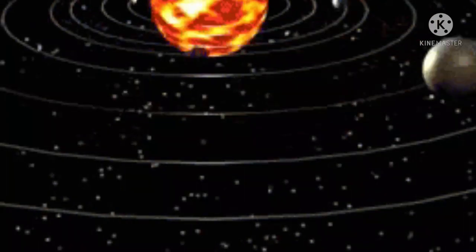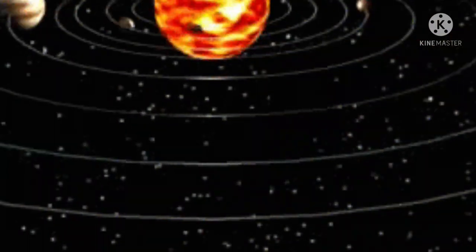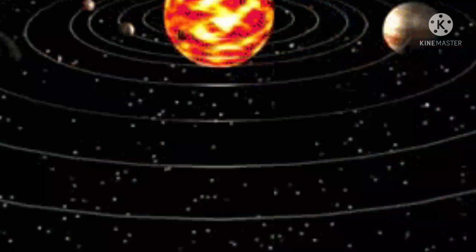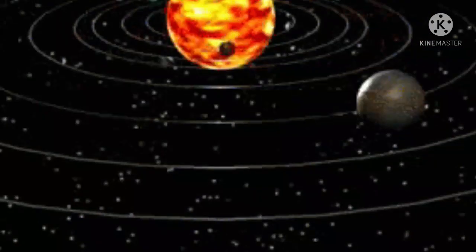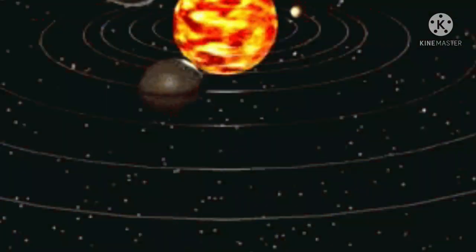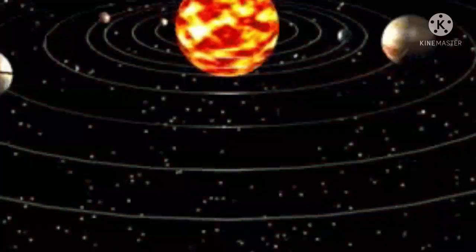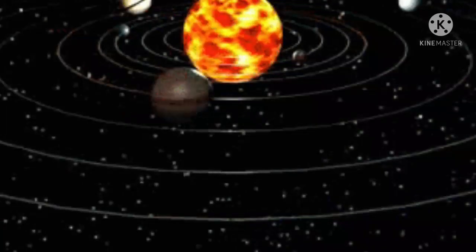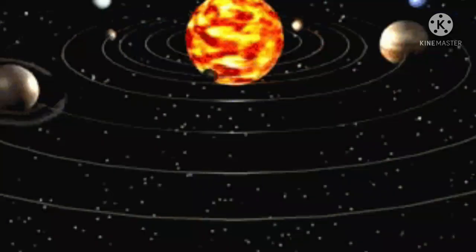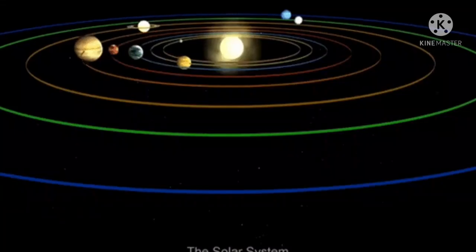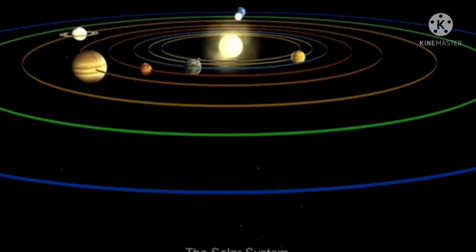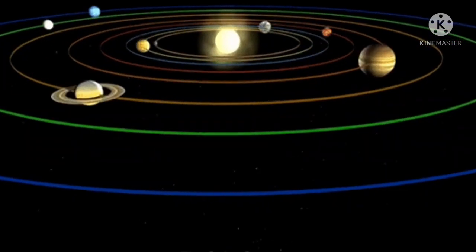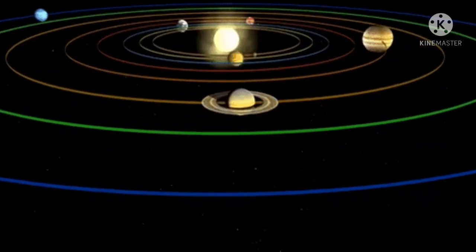Let's learn about the solar system. Our solar system is made up of the sun and the eight planets. Do you remember the eight planet names? Repeat with me. They are Mercury, Venus, Earth, Mars, Jupiter, Saturn, Uranus, and Neptune.